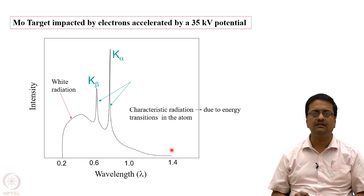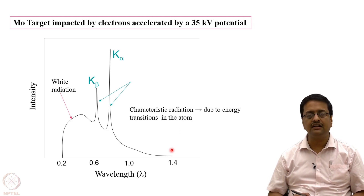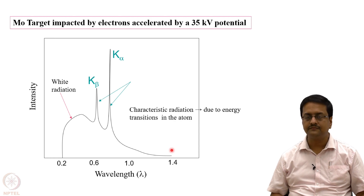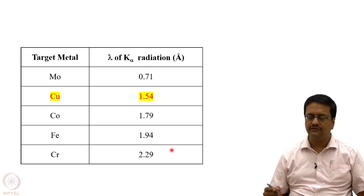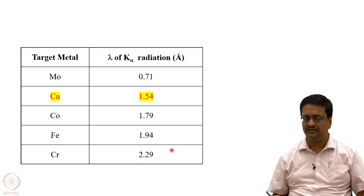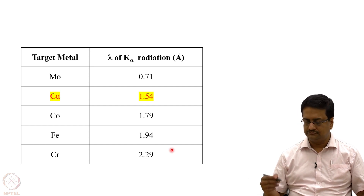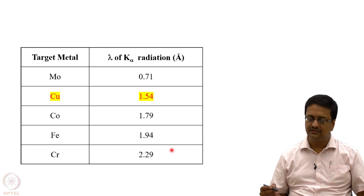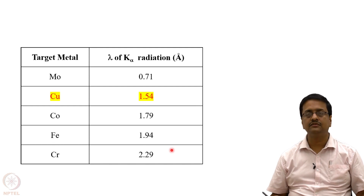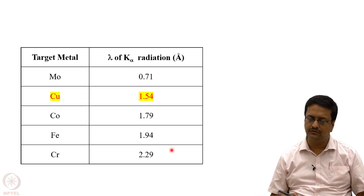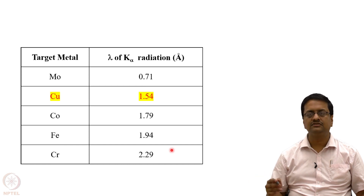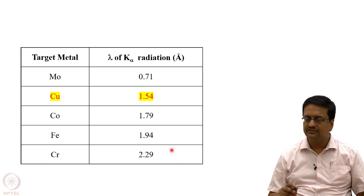In general, for all X-ray diffraction purposes we use K-alpha radiation. As you already know, there are different metal-based sources used for X-ray diffraction: molybdenum, copper, cobalt, iron, chromium, and nowadays silver-based sources as well, with wavelengths varying from 0.71 angstrom to 2.29 angstrom. The most widely used radiation is molybdenum for single crystal X-ray diffraction, while copper X-ray is used mostly for powder X-ray diffraction because of its larger wavelength.